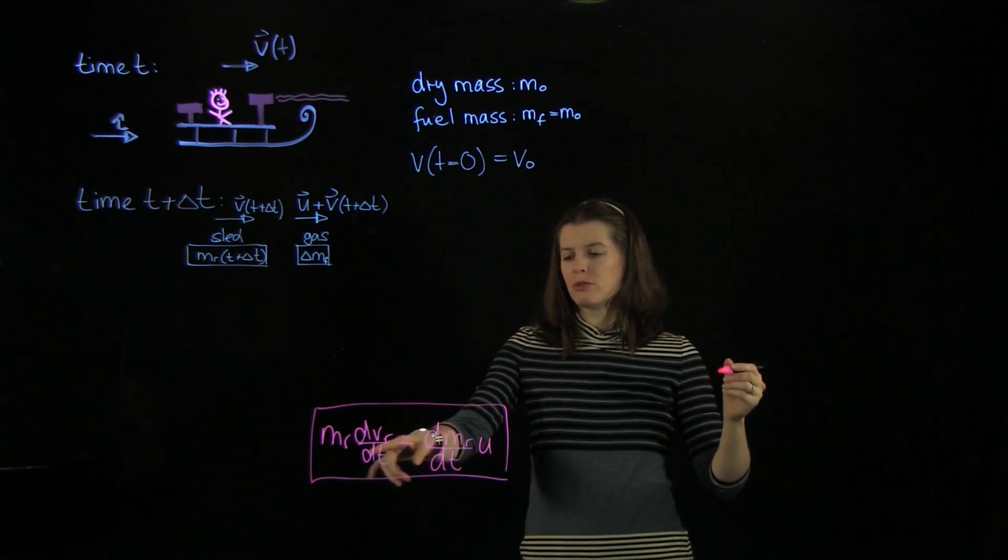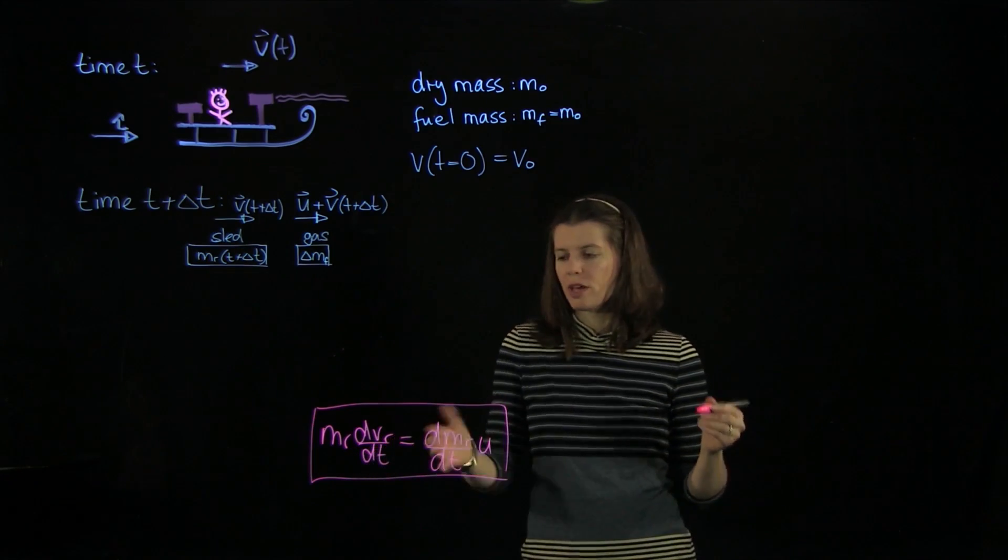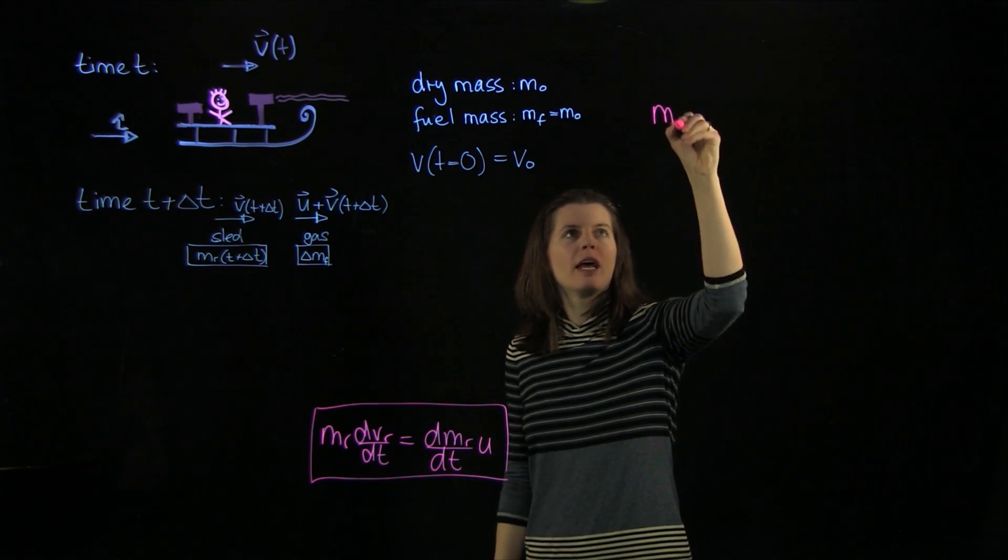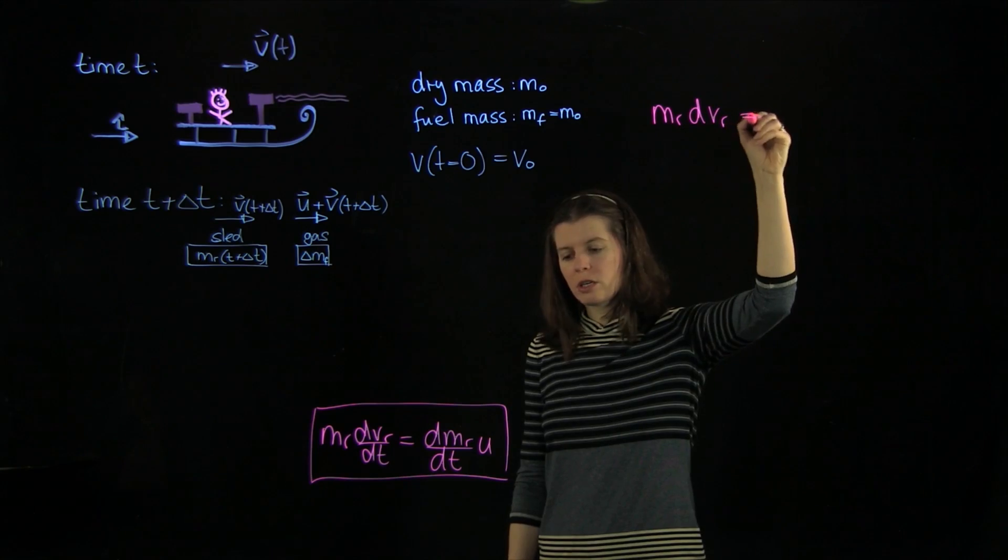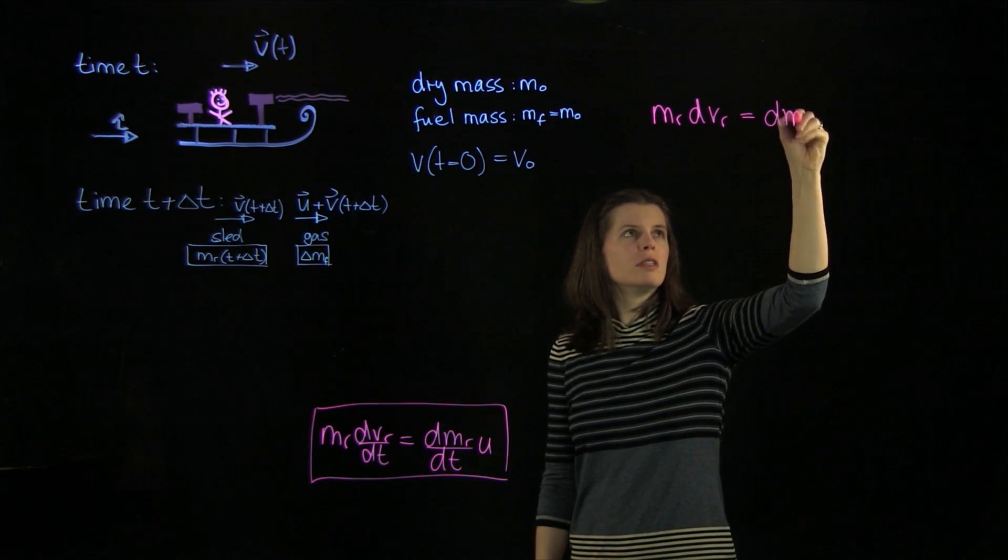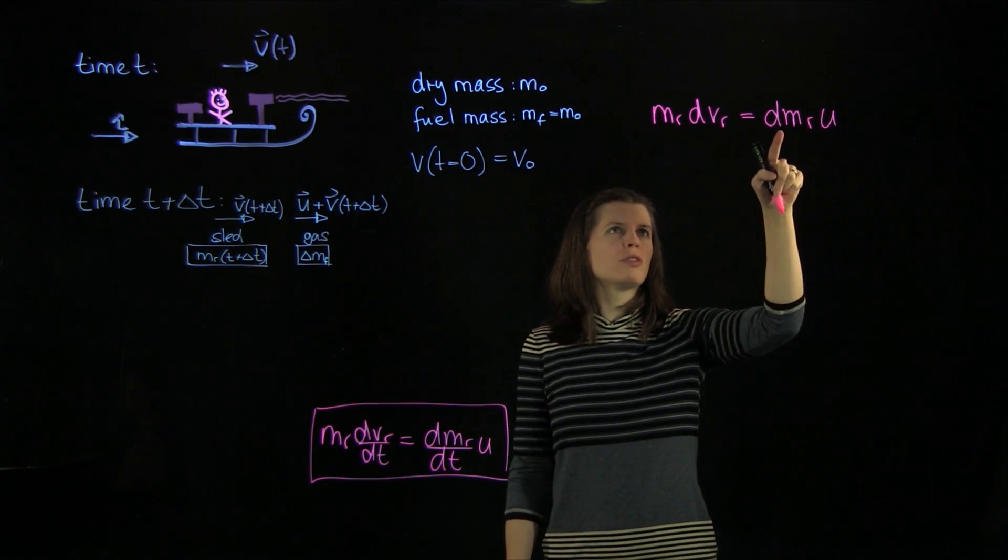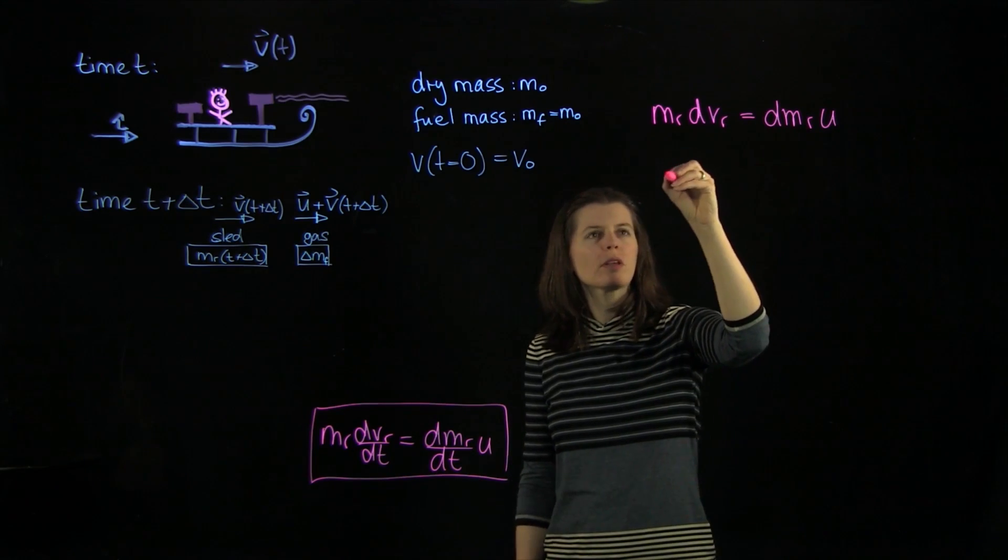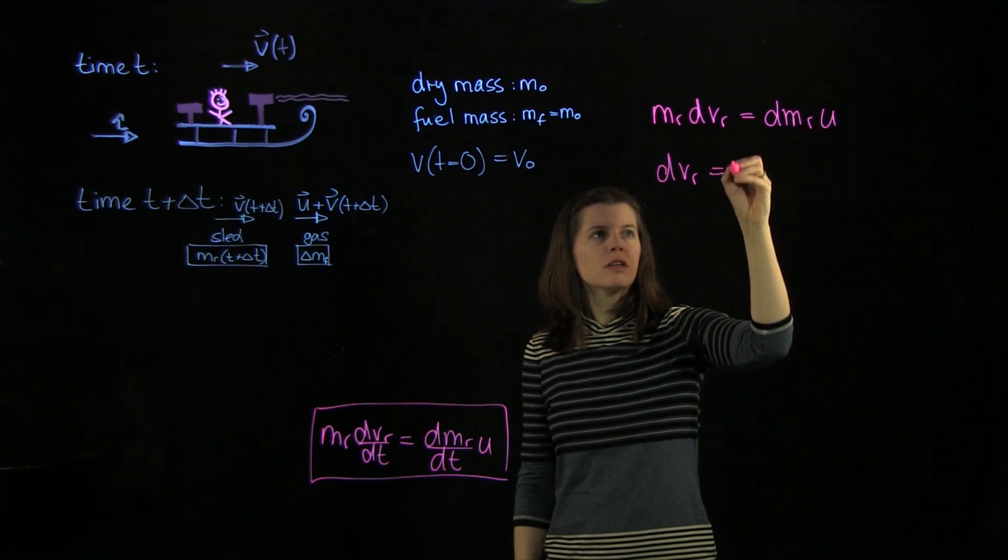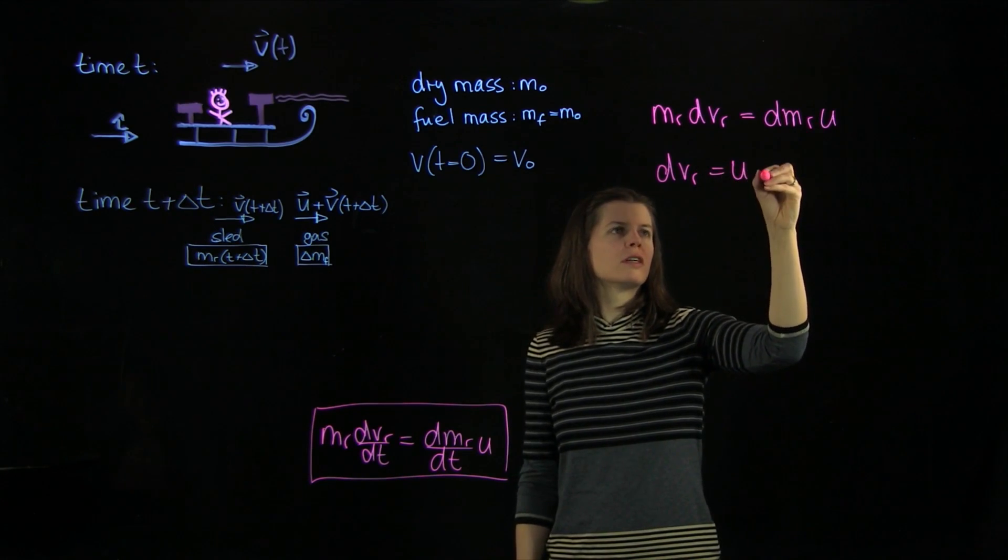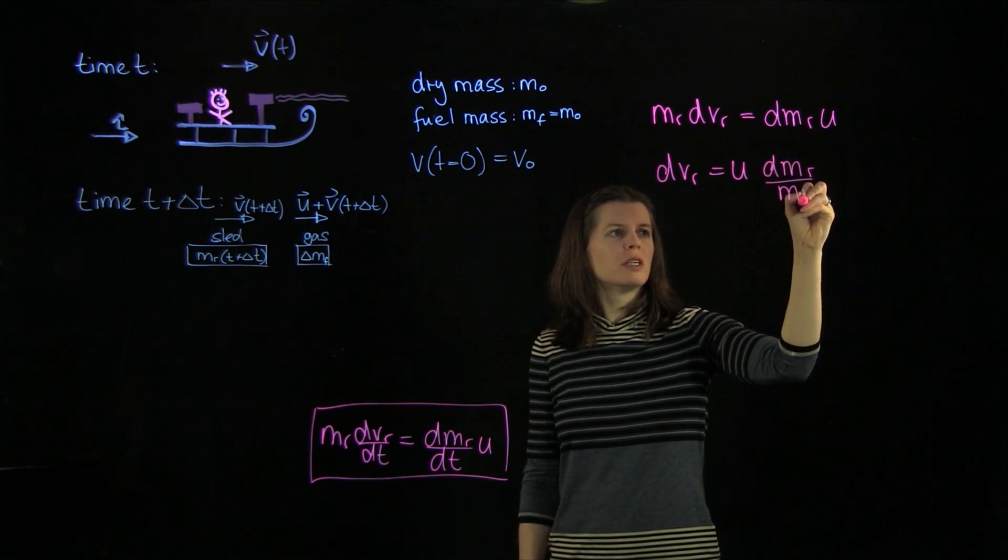What we're going to do is first we're going to multiply by dt, so that falls away. And we're left with mr dvr equals dmr u. And we're going to shuffle the m onto the other side. And we're left with dvr equals u as a constant, so that goes up front, and then we have dmr over mr.